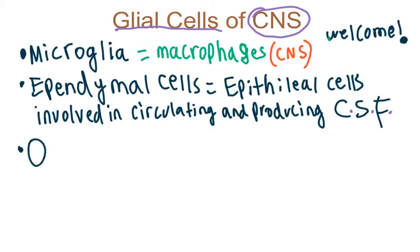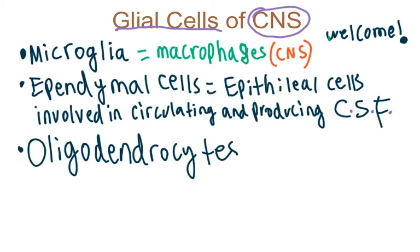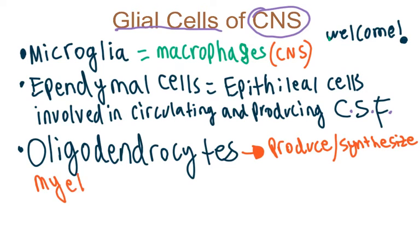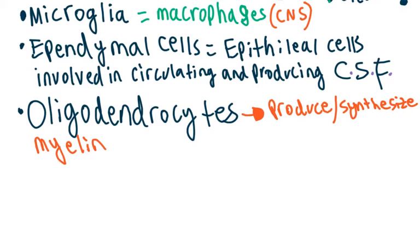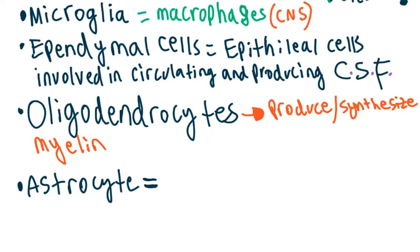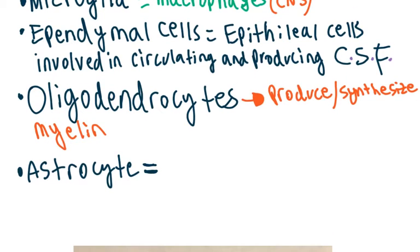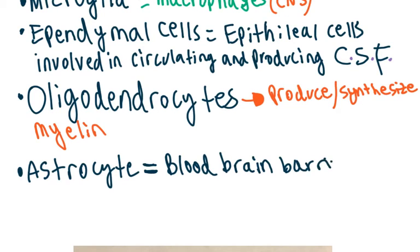Our third type of glial cell is oligodendrocytes. The main function of oligodendrocytes in the central nervous system is to produce and synthesize the myelin in our white matter. The last glial cell we'll talk about is the astrocyte, which has a lot of cool functions — glial scarring, immune involvement, and the blood-brain barrier.